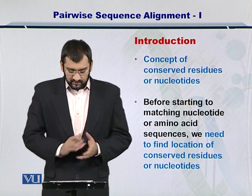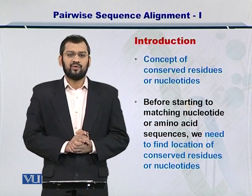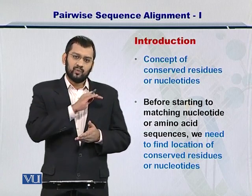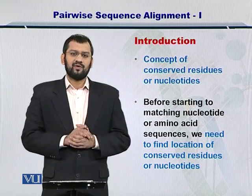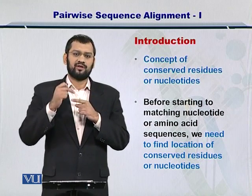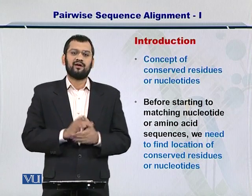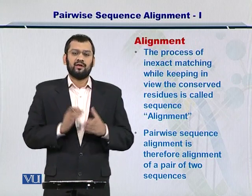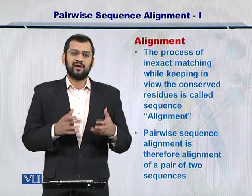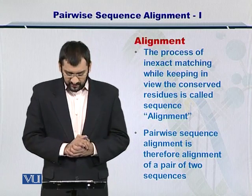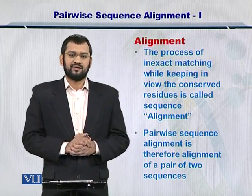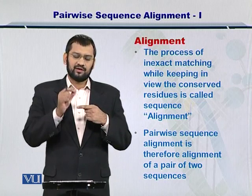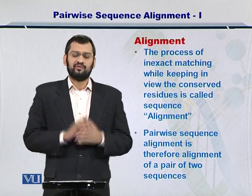To introduce you to the topic of pairwise sequence alignment, you need to identify conserved sequences — unchanged sequences or amino acids within the overall sequence. To begin with, you need to check each amino acid in the corresponding sequence and see if there is a change or if they are conserved. This process involves inexact matching, or considering mismatches while matching the overall sequence. Therefore, this process is called alignment — two sequences align against each other in an inexact way, accommodating certain differences within the sequences.